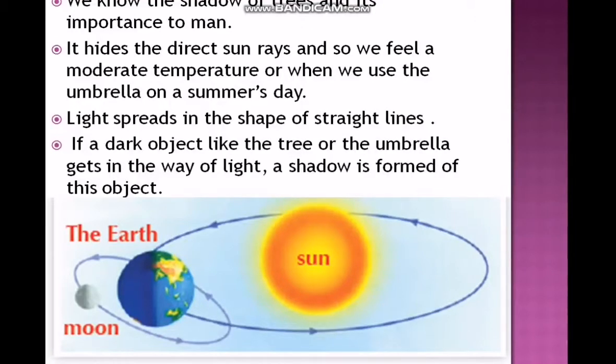We know that light travels in a straight line, and if a dark object like a tree or umbrella gets in the way of light, a shadow is formed for this object. We also know that the Earth revolves around the Sun in an oval orbit, and the moon revolves around the Earth in an oval orbit.